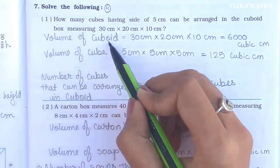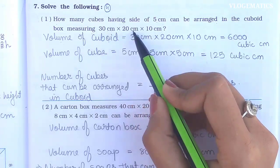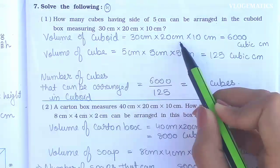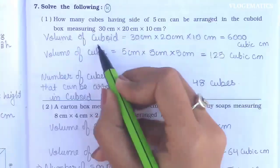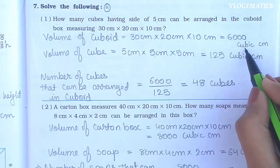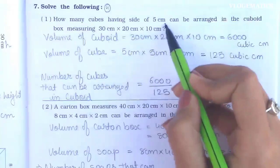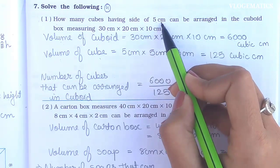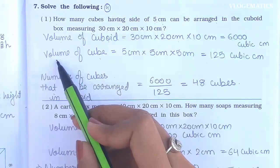First, we find the volume of the cuboid box. The formula is: volume = length × breadth × height. Here the length is 30 cm, breadth is 20 cm, and height is 10 cm. So volume of cuboid box = 30 cm × 20 cm × 10 cm = 6000 cubic centimeters.